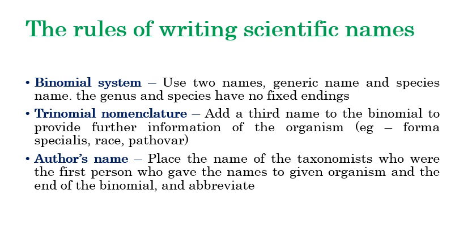Now we will get into the rules and regulations for writing a scientific name. The first rule is the binomial system — the name itself indicates two names. Each and every fungus has two names: the genus name and the species name. This is called the binomial system of nomenclature, erected by Carolus Linnaeus.